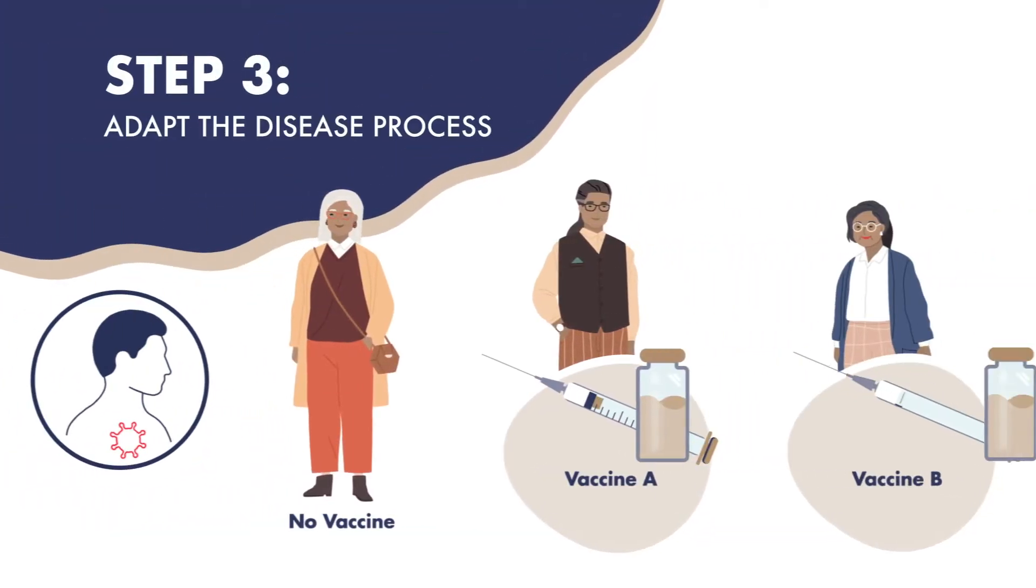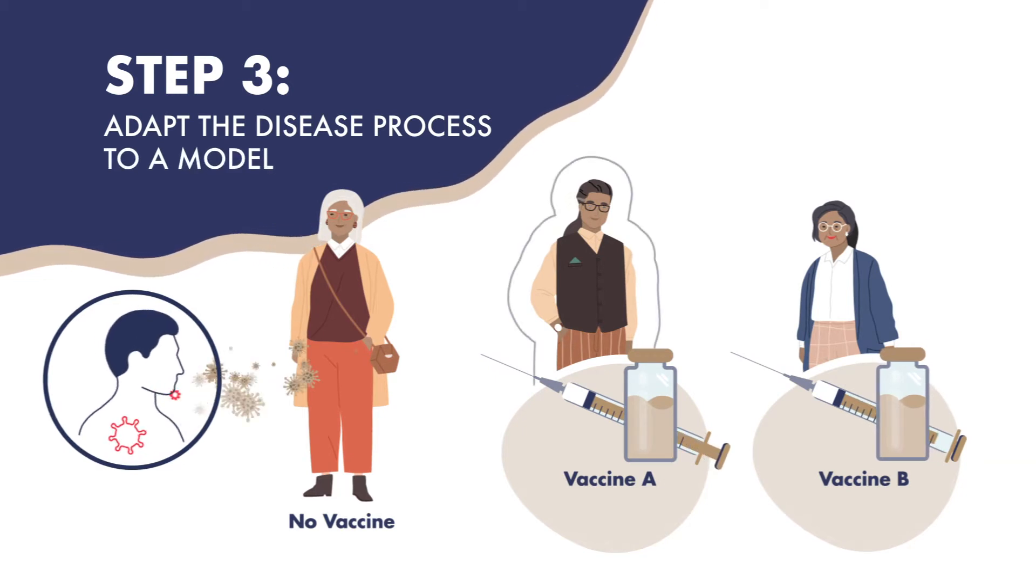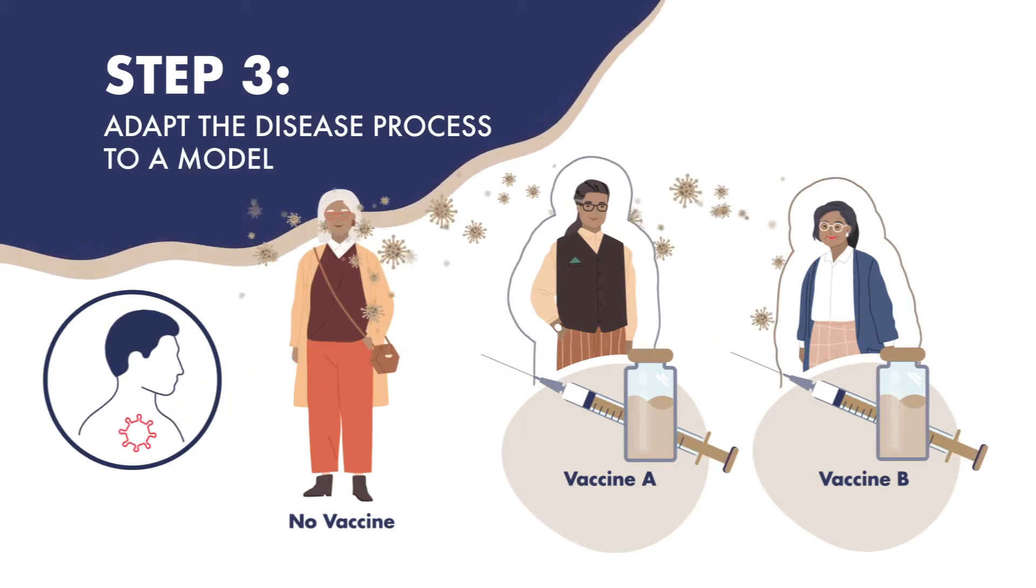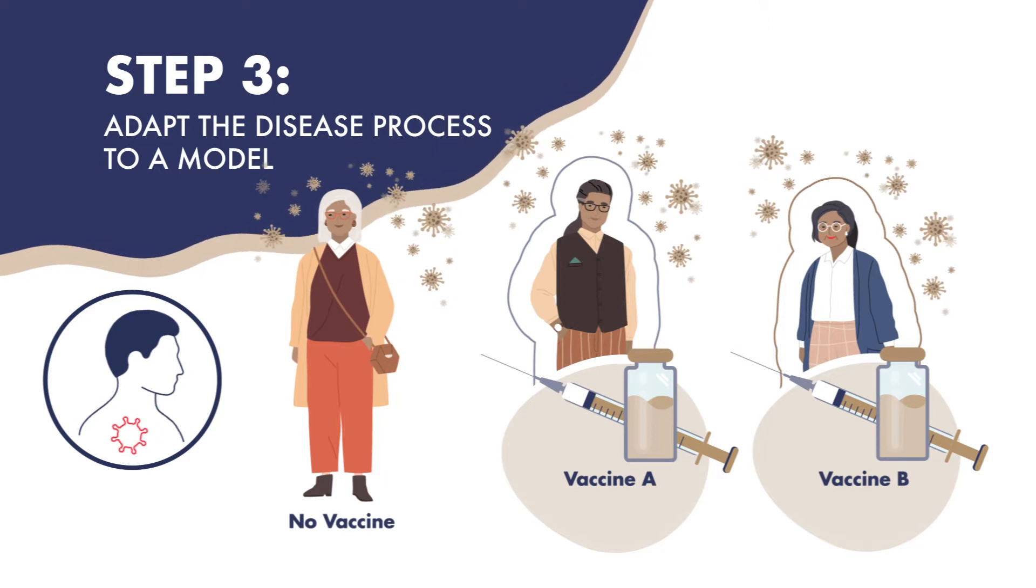Step 3: Adapt the disease process to a model. In our model, we can illustrate how different vaccines affect the spread of seasonal influenza between susceptible and infected peoples.